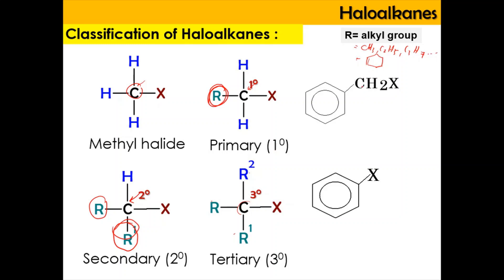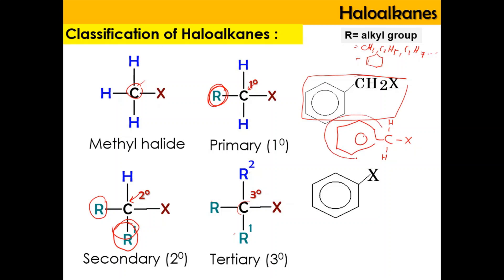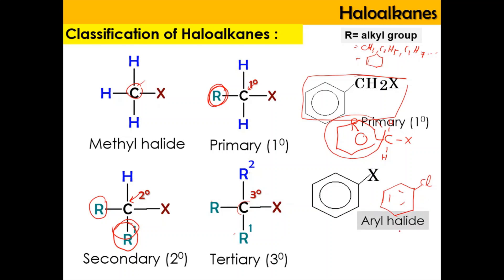Expanding the structure gives us C, H, H, and X. When this carbon is attached to a benzene ring — or phenyl group, which we treat as R — the carbon is attached to one R group, making it a primary haloalkane. However, if the aromatic ring is attached directly to the halogen, for example chlorine replacing a hydrogen on the ring, that compound is known as an aryl halide, not a primary haloalkane. Aryl halide refers to an aromatic group directly bonded to a halogen.